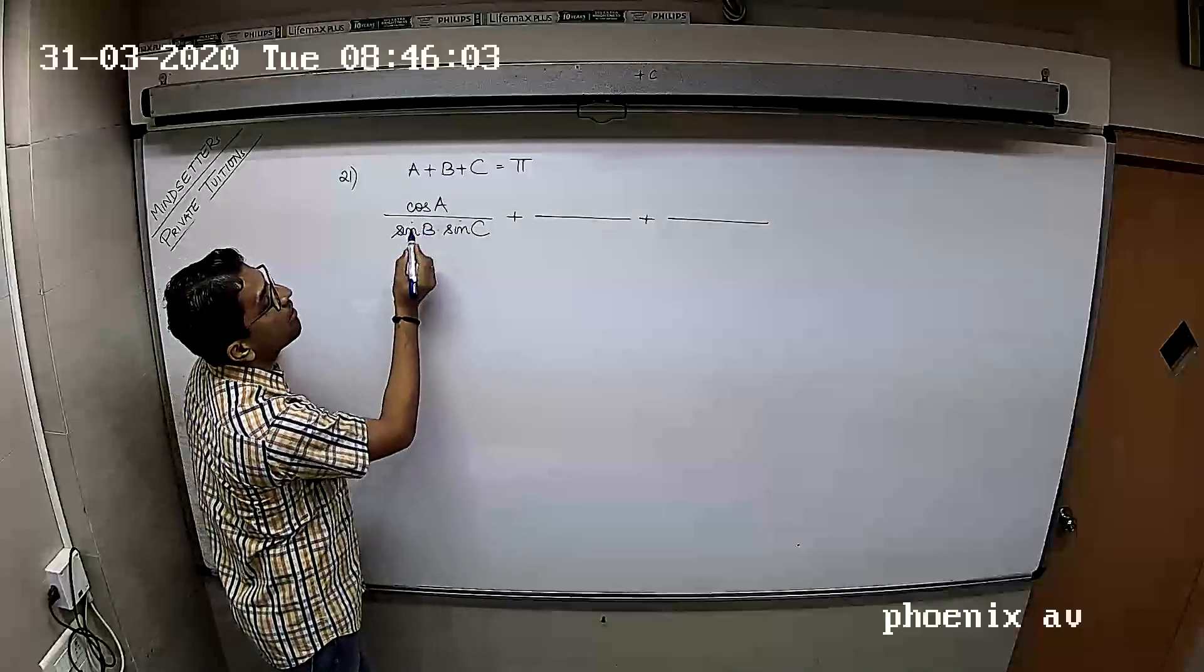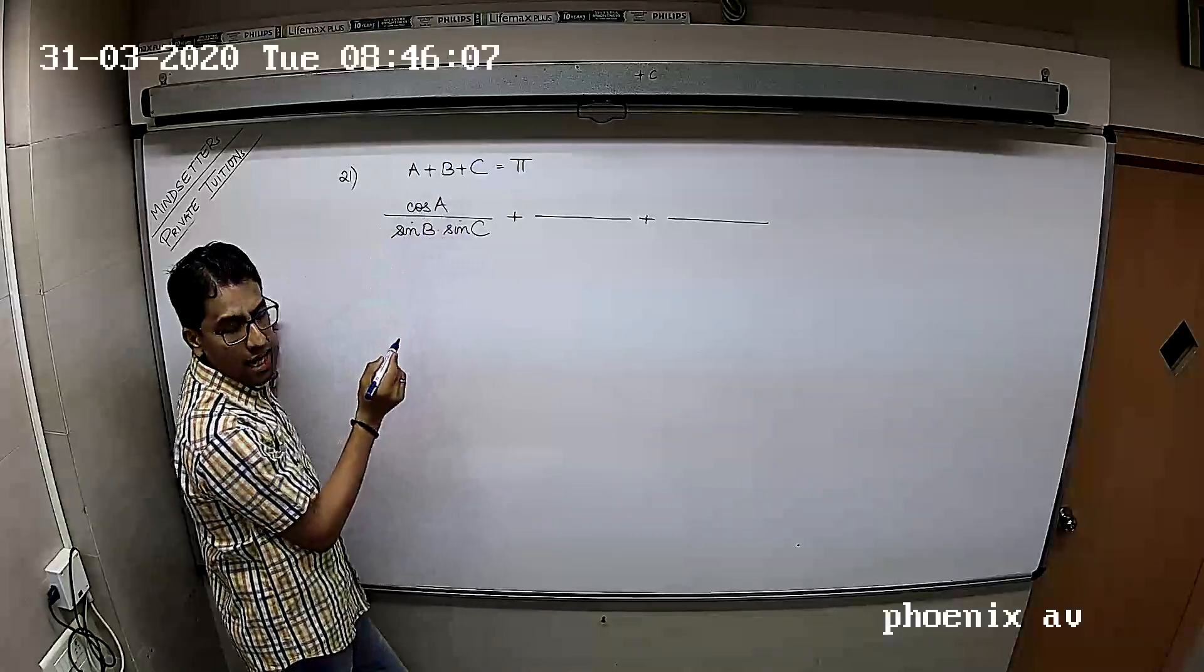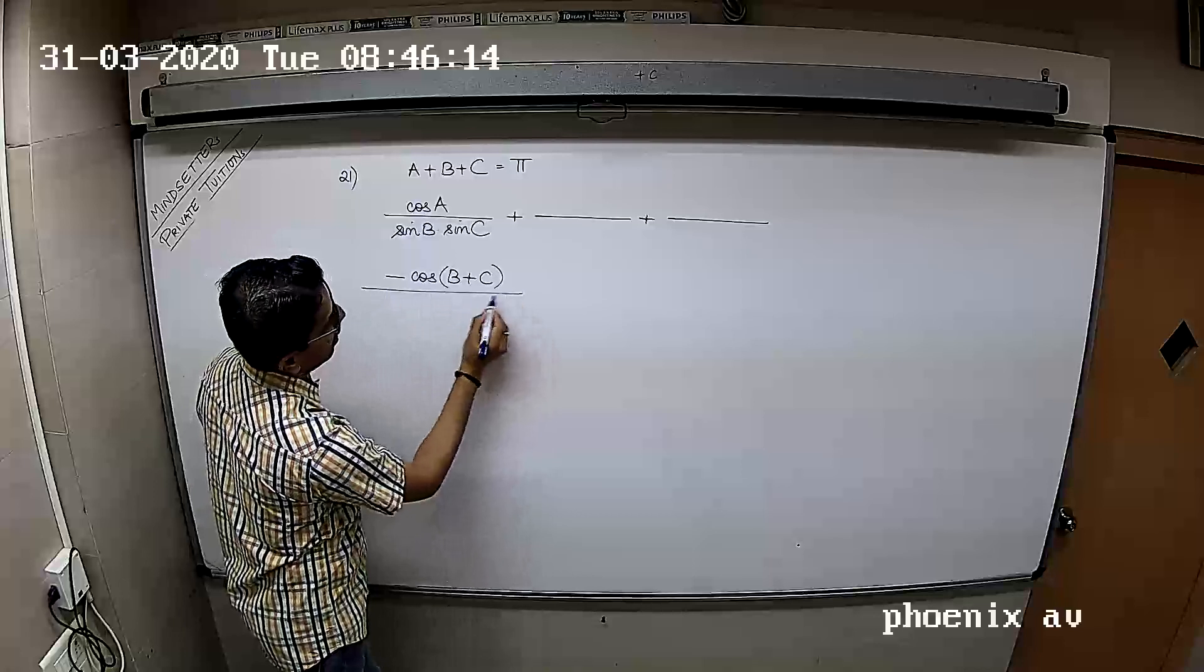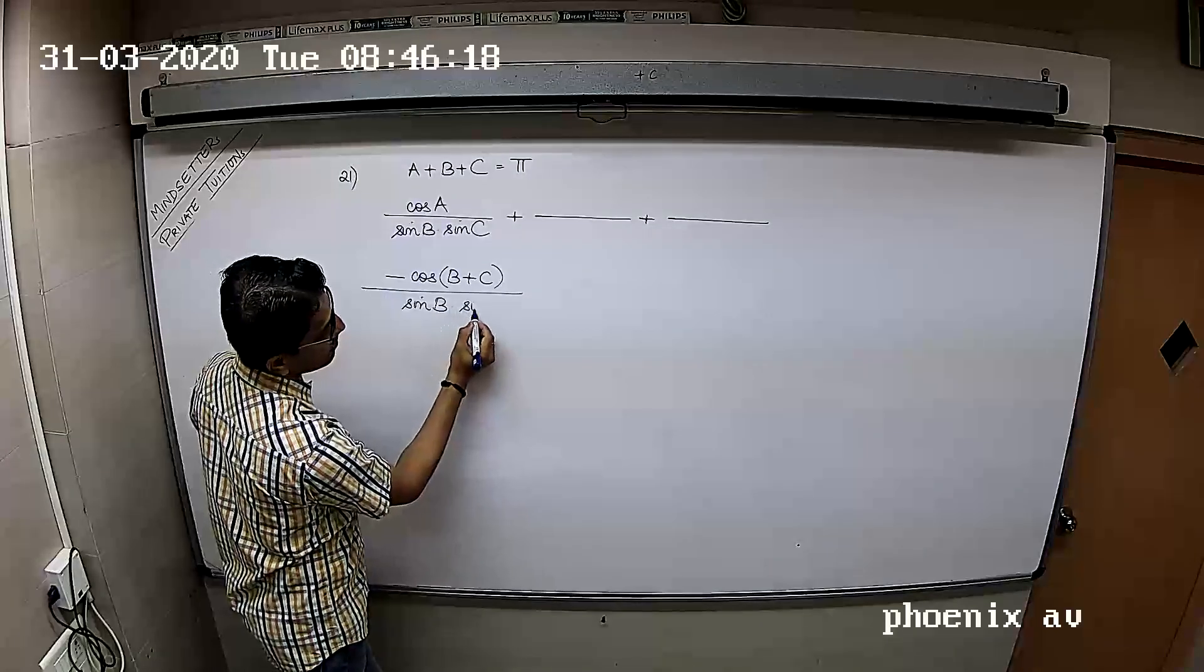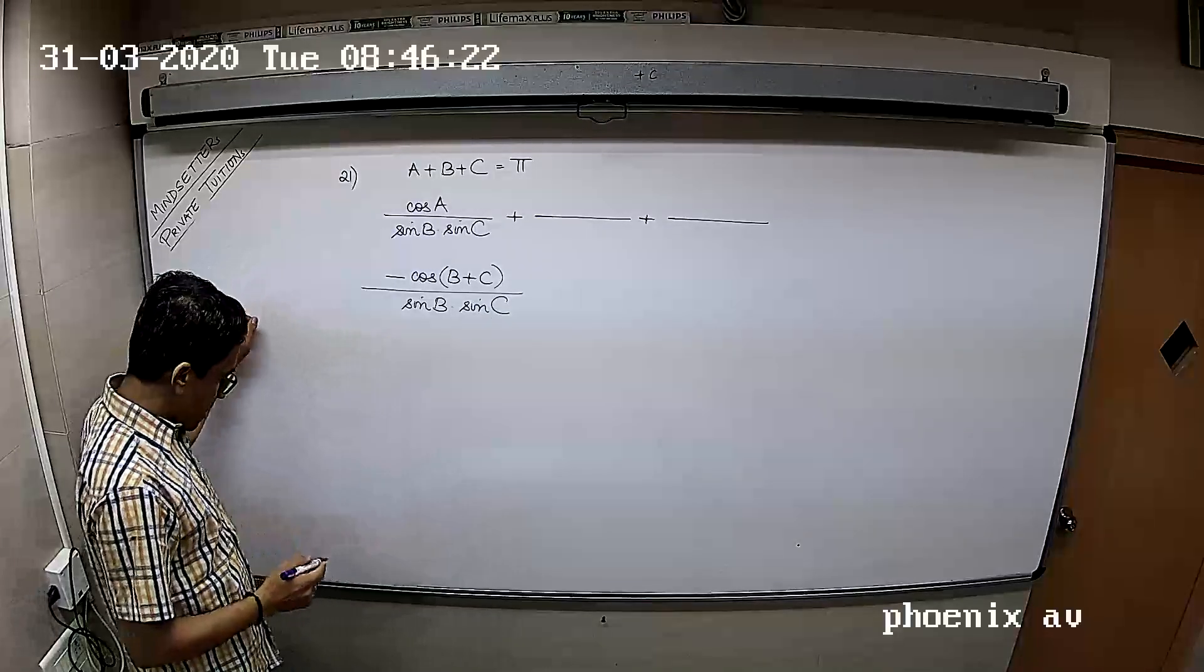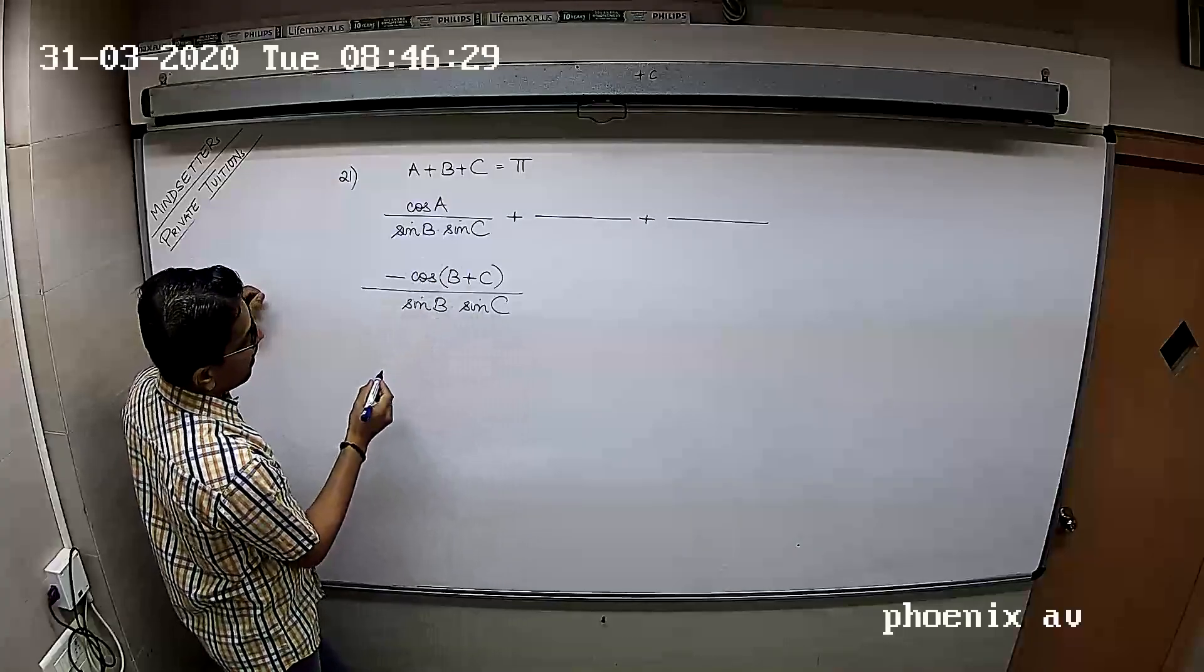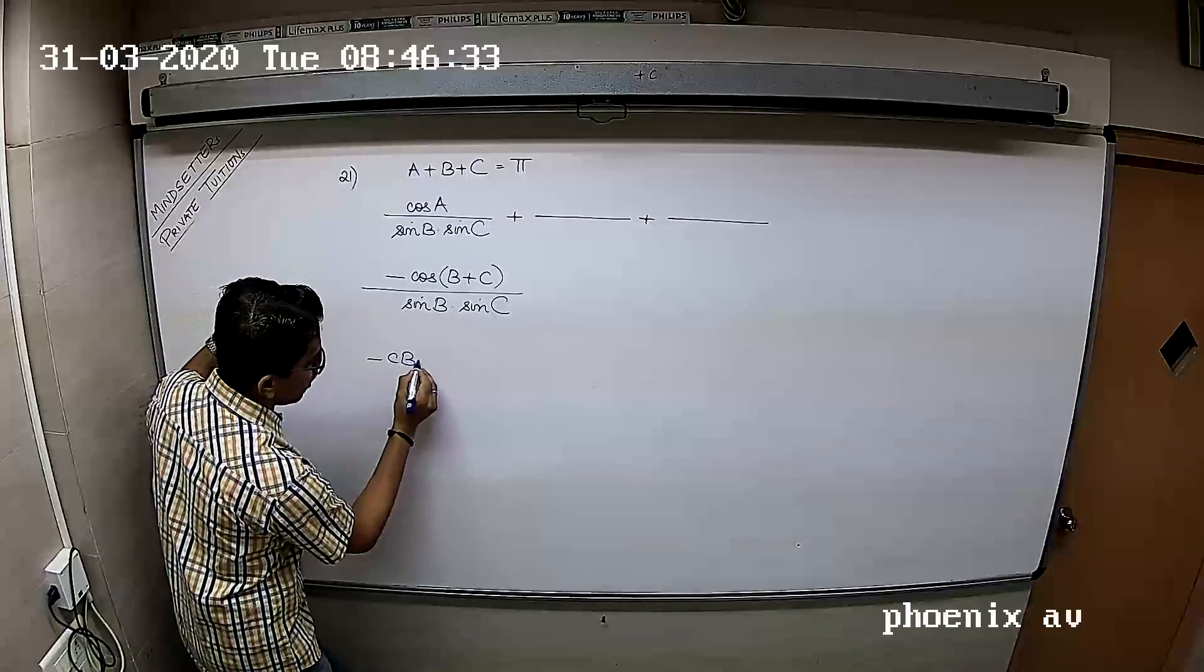Since A plus B plus C equals pi, can I write cos A as minus cos of B plus C? So this becomes minus cos of B plus C upon sin B sin C, and further we can write this as minus cos B cos C plus sin B sin C upon sin B sin C.